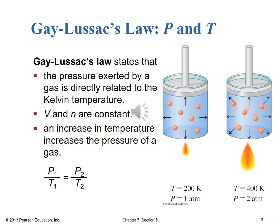Gay-Lussac's Law states that the pressure exerted by a gas is directly related to the Kelvin temperature. That should sound a lot like Charles' Law — in Charles' Law, instead of pressure, we were looking at volume. But because we had a direct relationship with temperature, we have the same sort of form of the equation. In this case, we're holding volume and number of moles constant; for Charles' Law, we held pressure and number of moles constant.